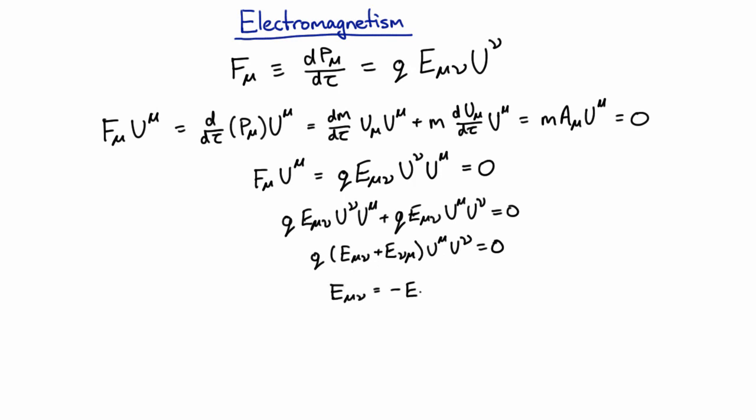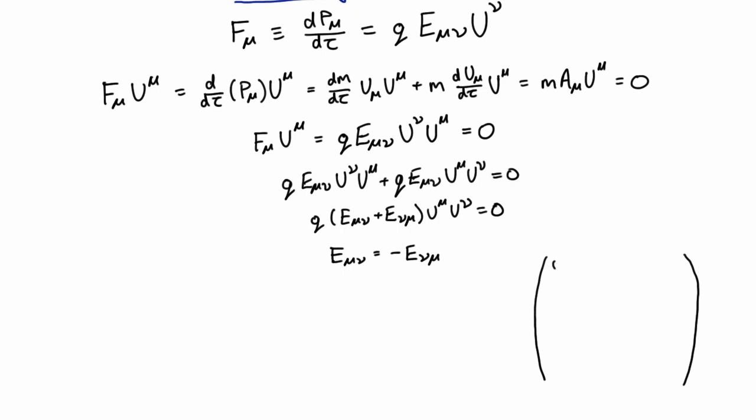So this tensor here must get a minus sign every time you swap the indices, which means of course the diagonal terms are zero. We might have expected that because if you think about that, that means in this tensor, if I was to write it out as in matrix form, we have four zeros down the diagonal and we have one, two, three, four, five, six independent components here and just the minus of them on the other triangle. So these two triangles have six independent components.